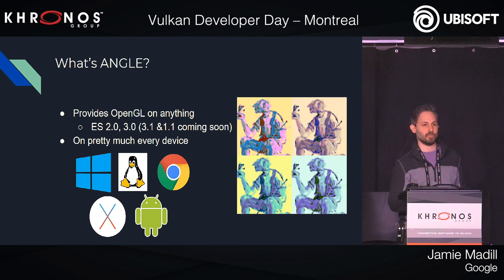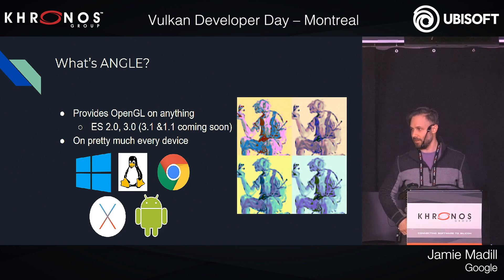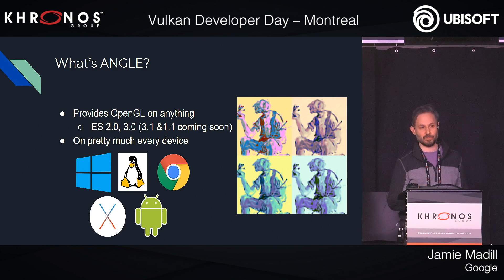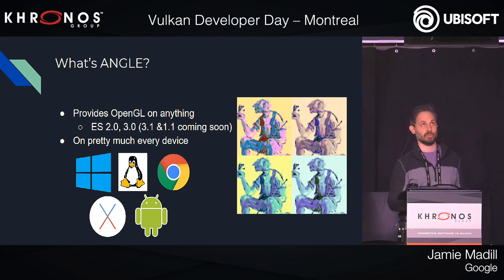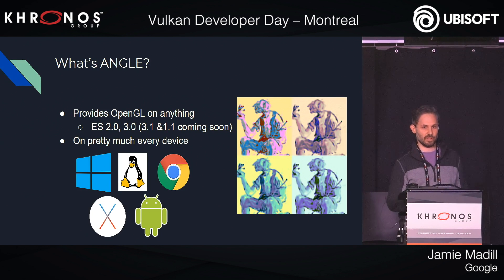ANGLE is a portable OpenGL implementation. It started back in about 2010 and was originally designed to help WebGL get started because people were a little bit worried about the stability of OpenGL drivers on Windows. So ANGLE came along and said, okay, we'll translate OpenGL into Direct3D. And since then it's kind of grown and become a bit of a monster. It can run on almost any platform and it can target Direct3D 9, Direct3D 11, OpenGL, and now we're doing Vulkan. Its design is to make OpenGL portable.